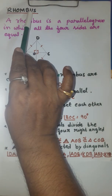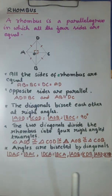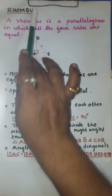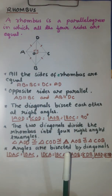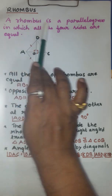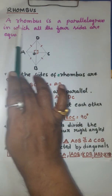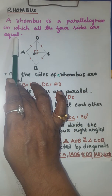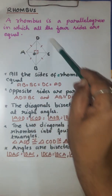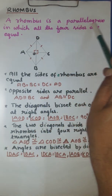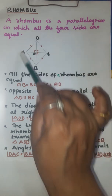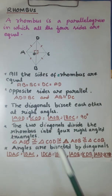Dear children, we shall learn about the rhombus. A rhombus is a geometrical shape. A rhombus is a parallelogram in which all the four sides are equal. A rhombus is a parallelogram because a parallelogram is also a geometrical shape in which opposite sides are equal.